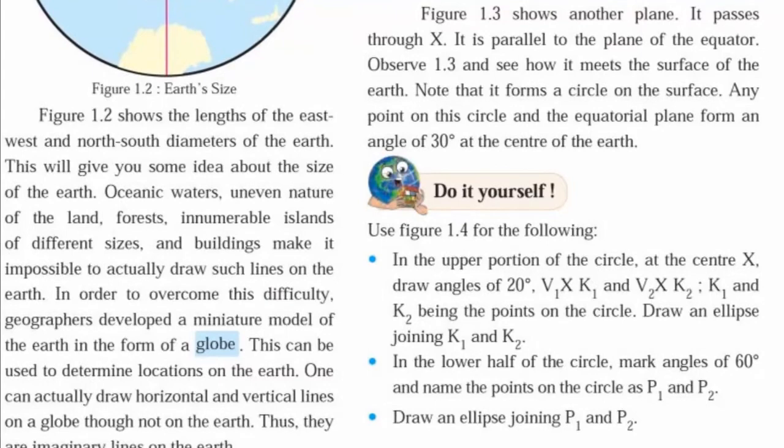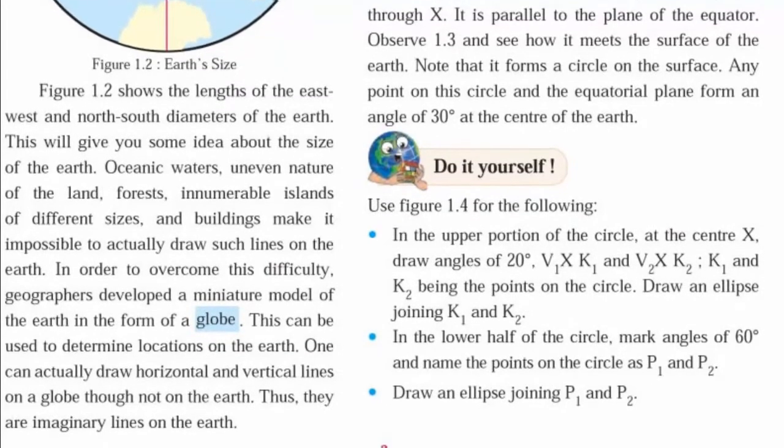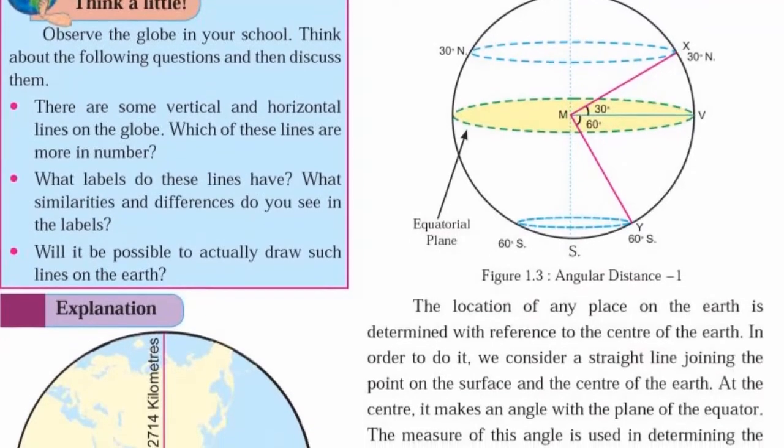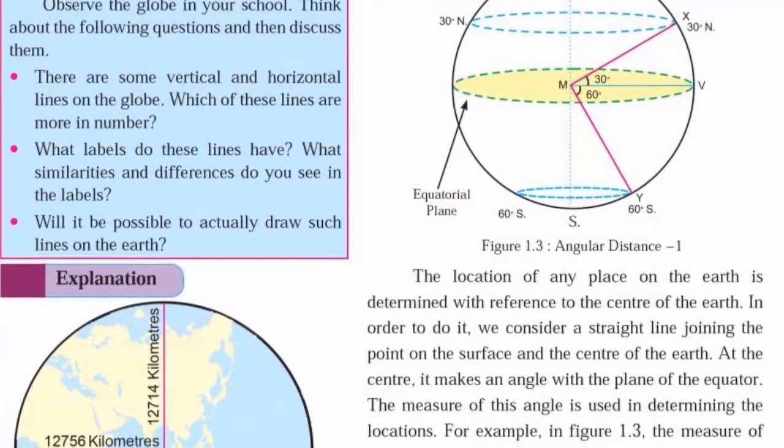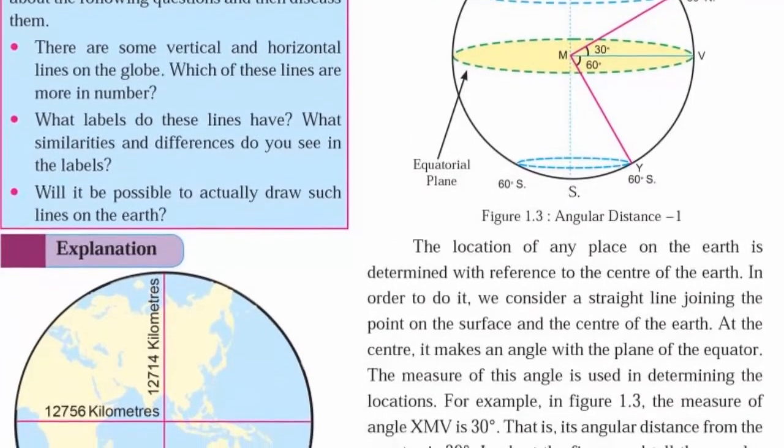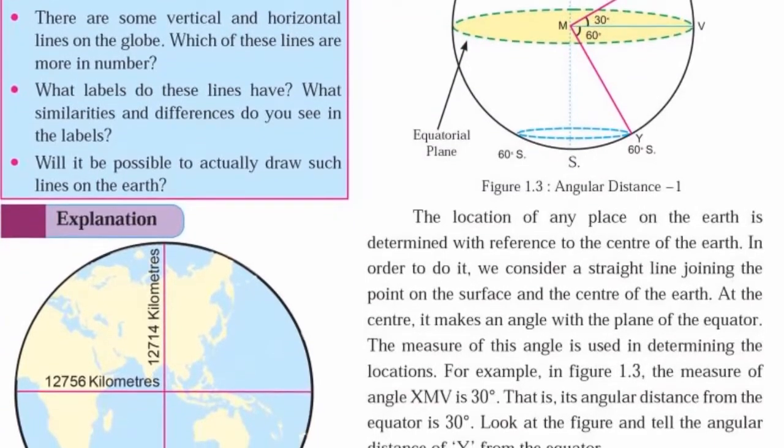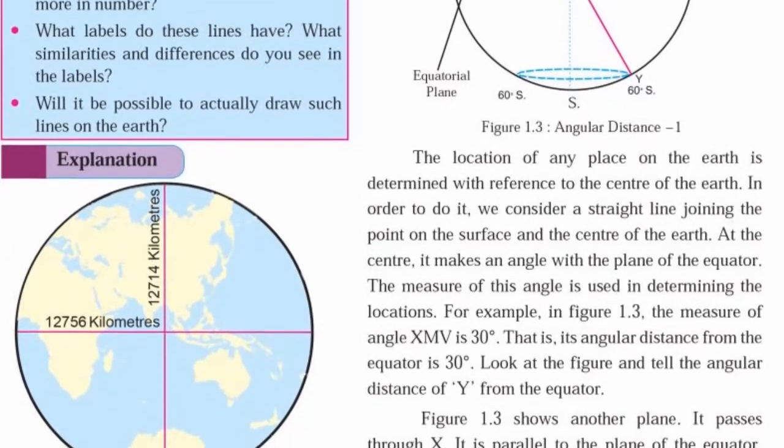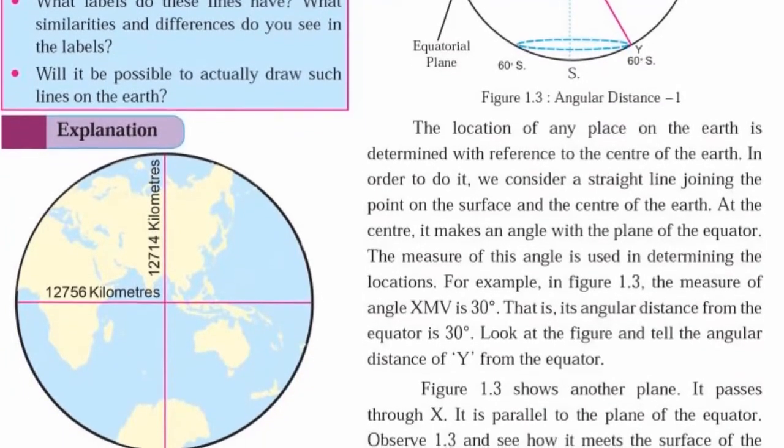Angular distance. The location of any place on the earth is determined with reference to the centre of the earth. Any point on the earth makes an angle with the plane of the equator.